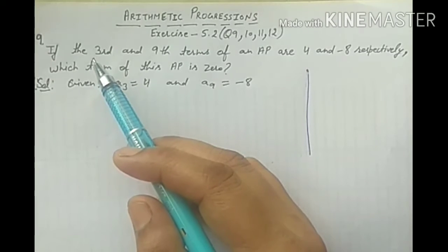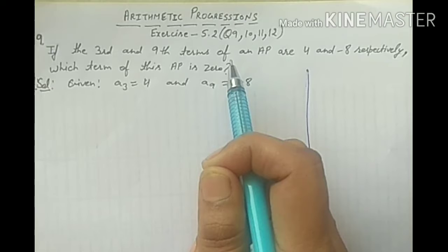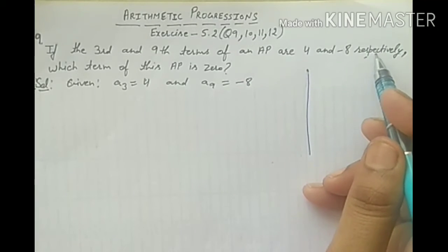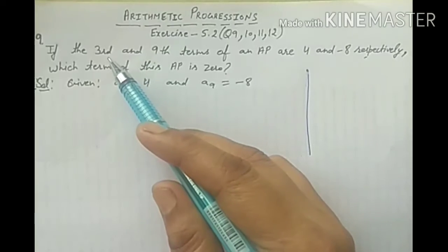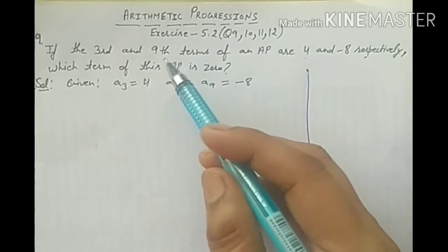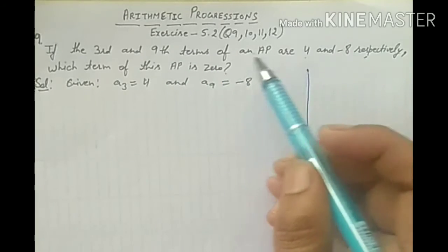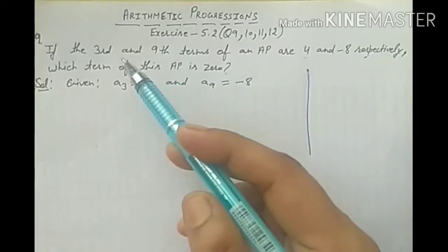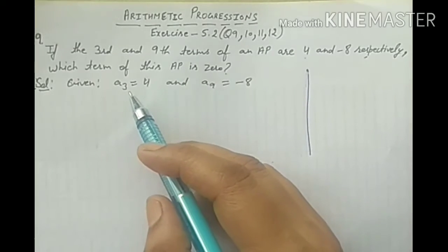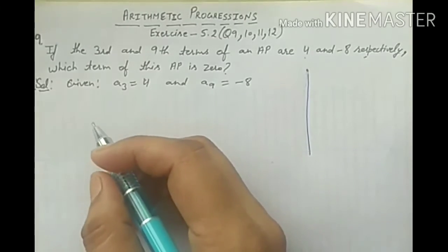Question 9: if the 3rd and 9th terms of an AP are 4 and minus 8 respectively. 'Respectively' का मतलब है कि पहले 3rd term that is equal to 4, and बाद में 9th term is minus 8. So A3 is equal to 4 and A9 is equal to minus 8.